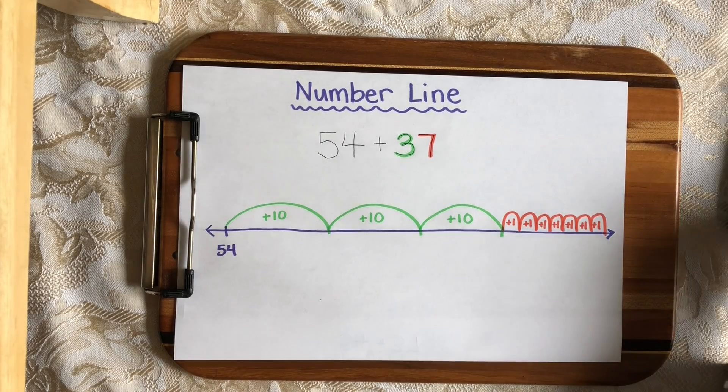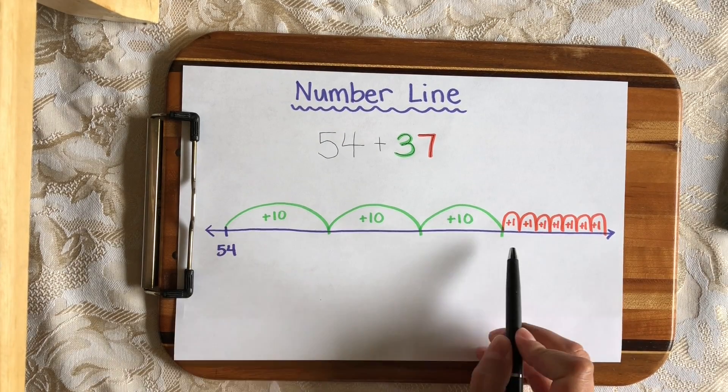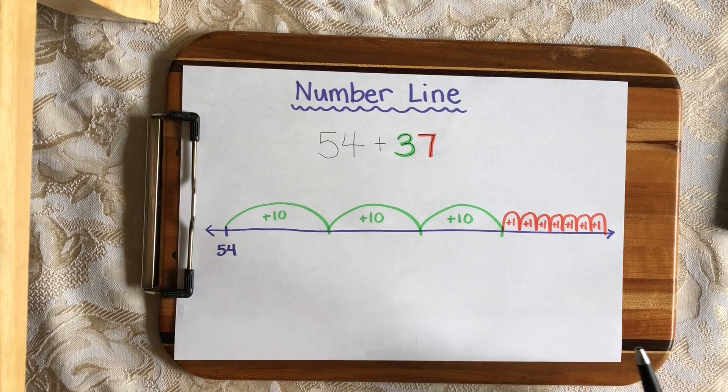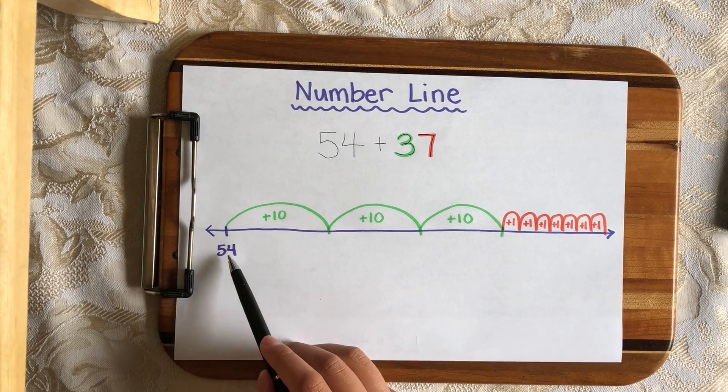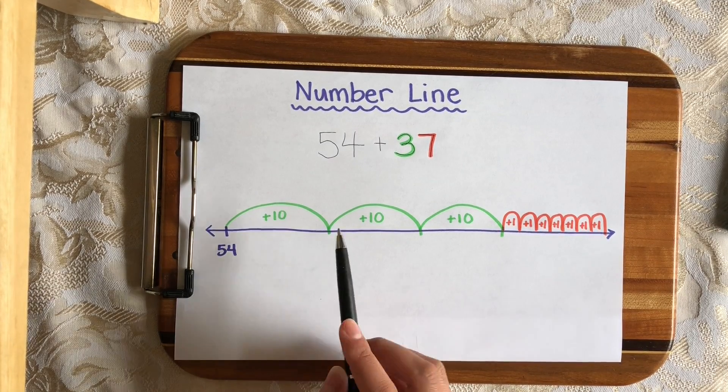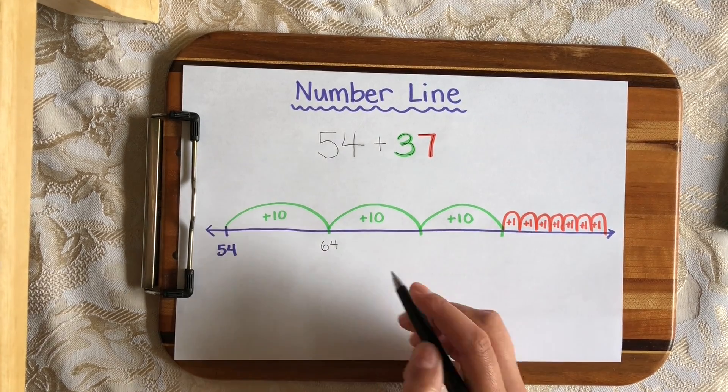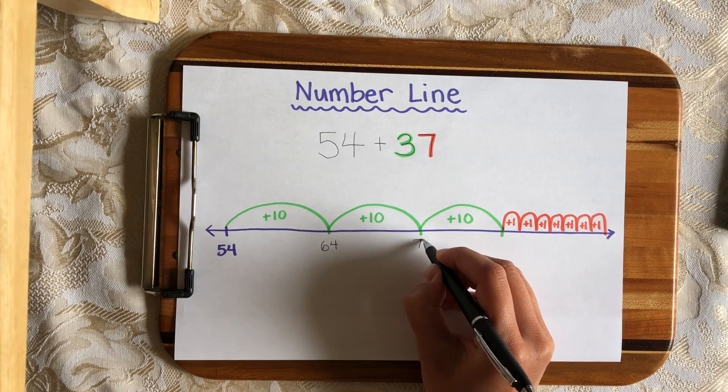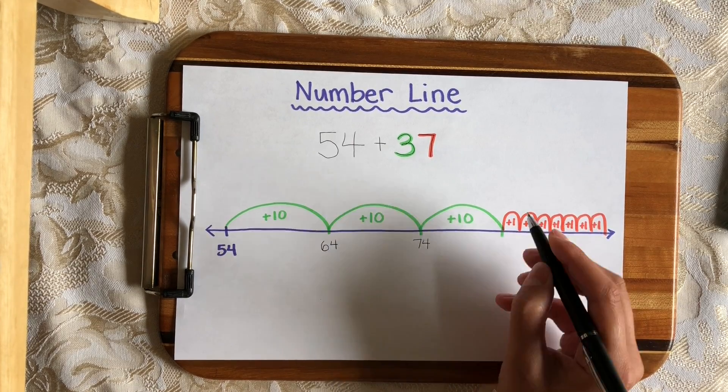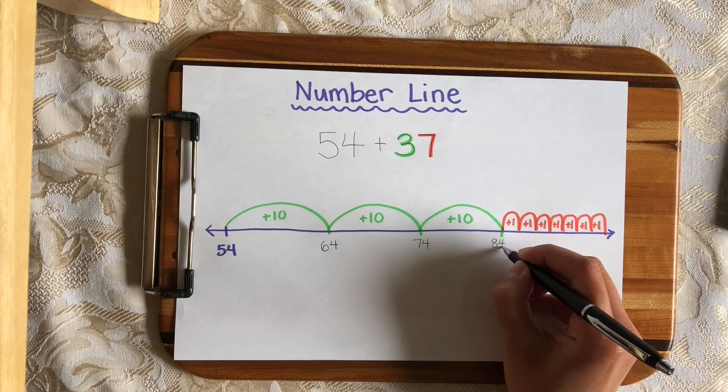Now I need to fill in my numbers below the number line so that I can see what the sum is. So if we start at 54 and we make a hop of 10, that gets us to 64. And then if we make another hop of 10, that gets us to 74. Another hop of 10 gets us to 84.